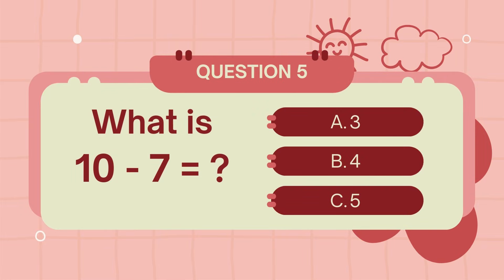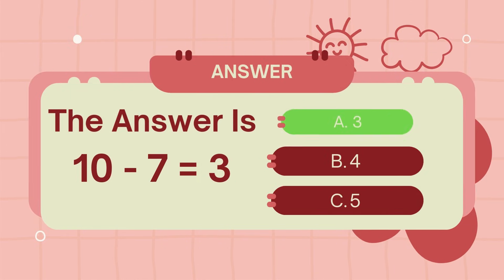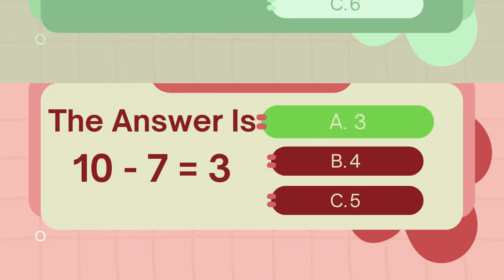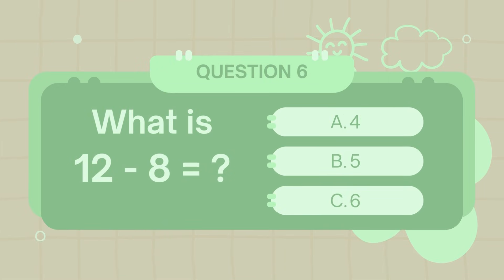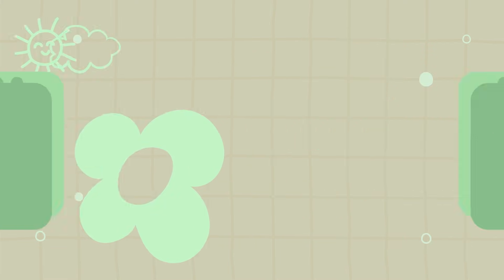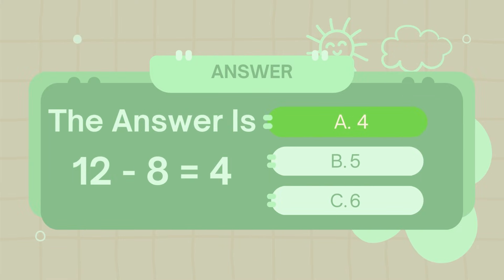What is 10 minus 7? The answer is 3. What is 12 minus 8? The answer is 4.